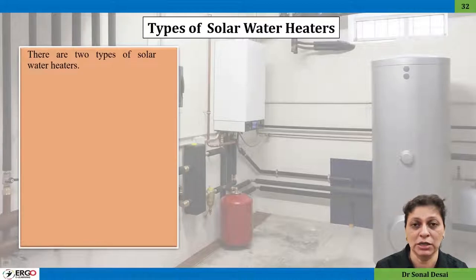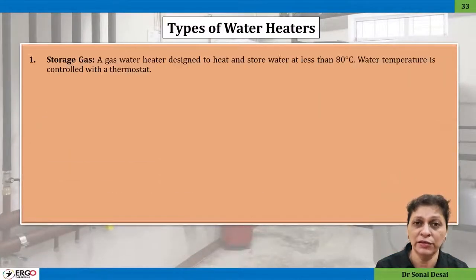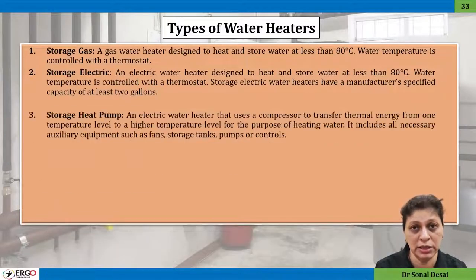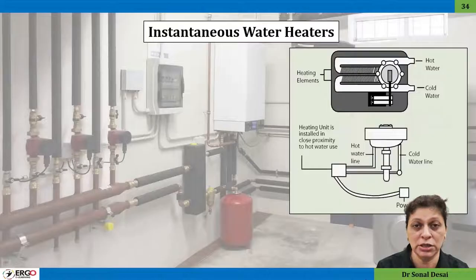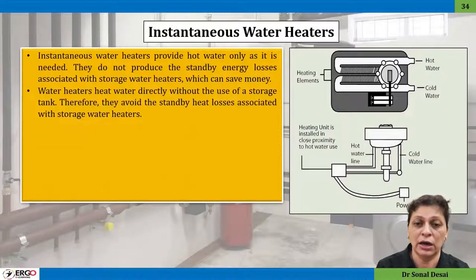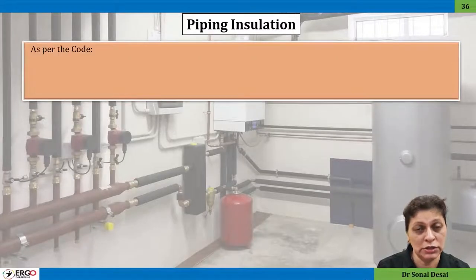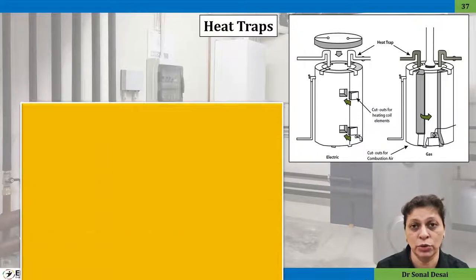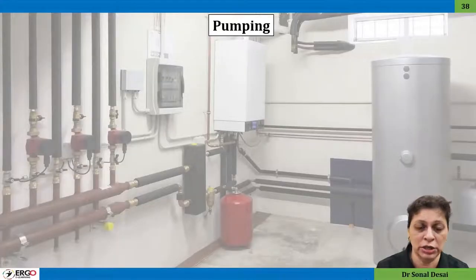The fourth part of the course is about service water heating, with a dedicated video series covering both passive and active solar water heating, as well as non-solar types like gas-based and electricity-based heaters — both storage type and instantaneous. Design considerations, heat losses, and insulation are detailed, including the use of heat traps to prevent undue hot water circulation.